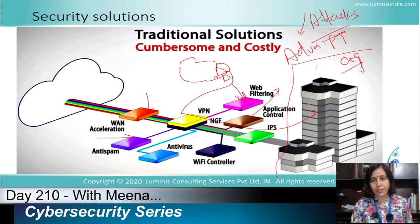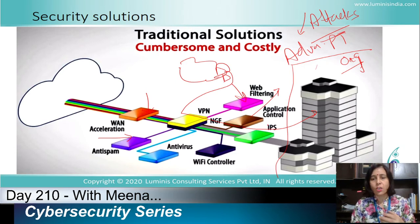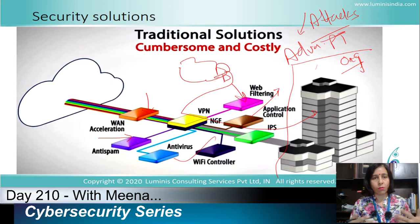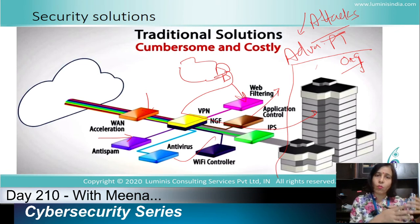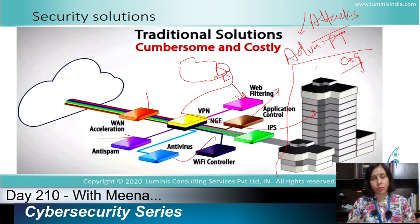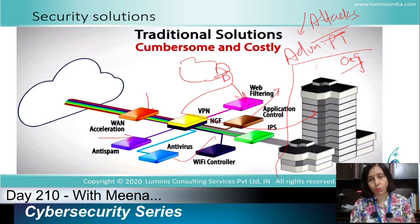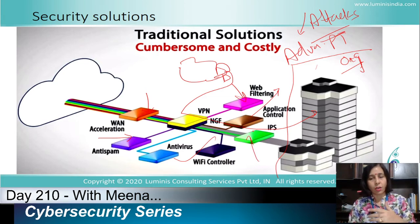For application control, we manage which applications clients can access and which parts are visible to certain departments. We also need a Wi-Fi controller, since hackers can hack Wi-Fi devices, establish rogue Wi-Fi routers, or gain access to our network through Wi-Fi — so Wi-Fi network protection is essential.